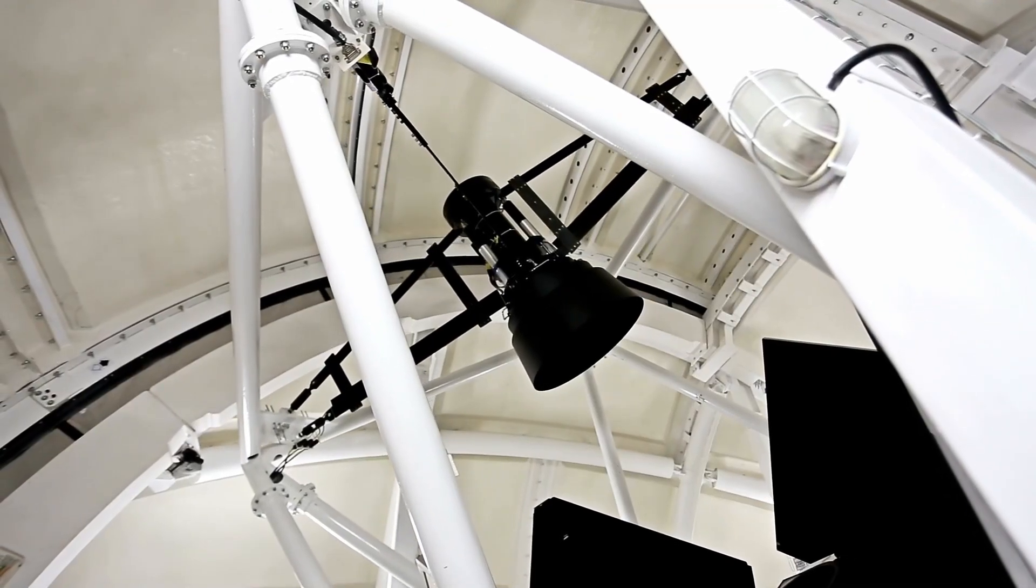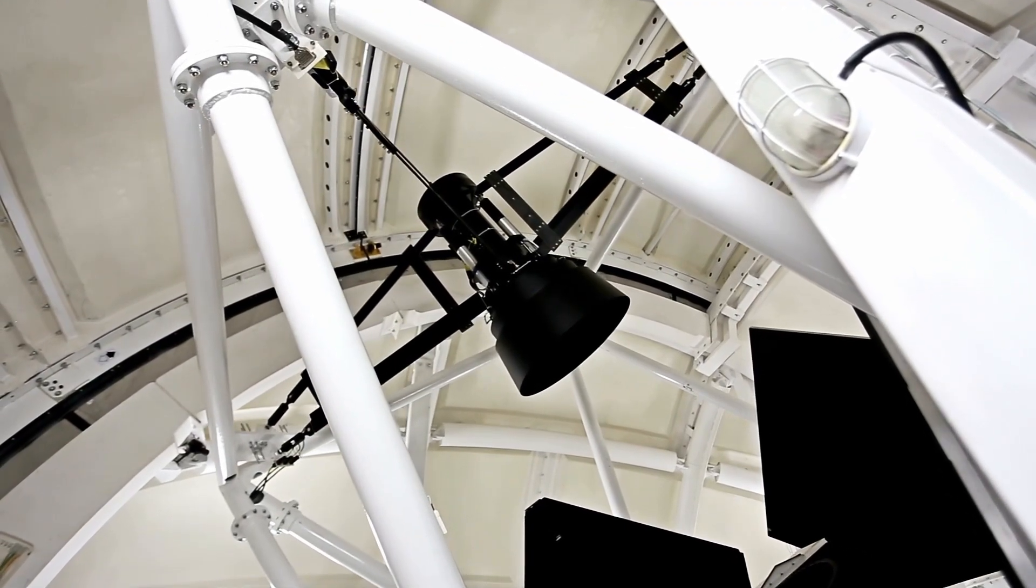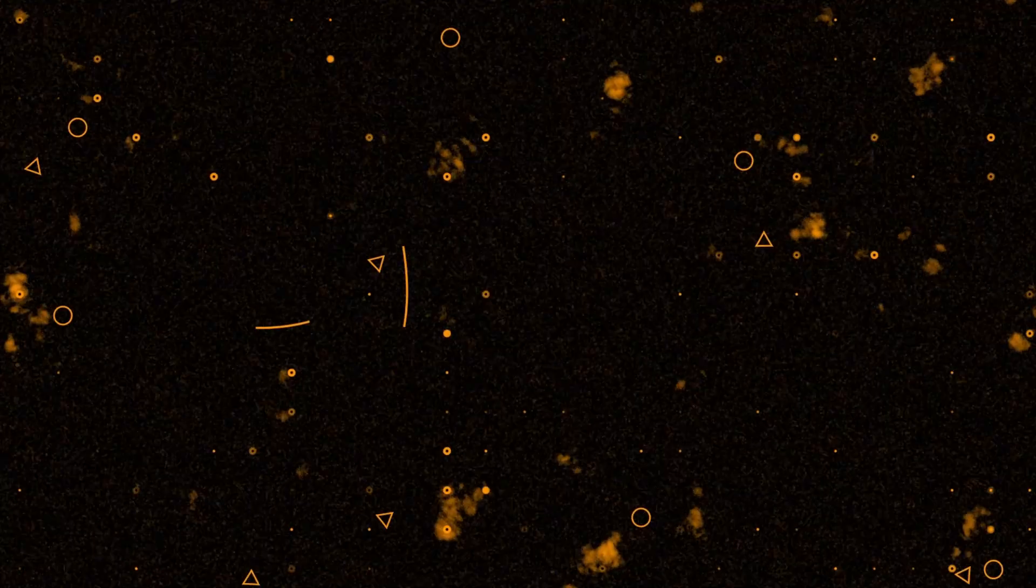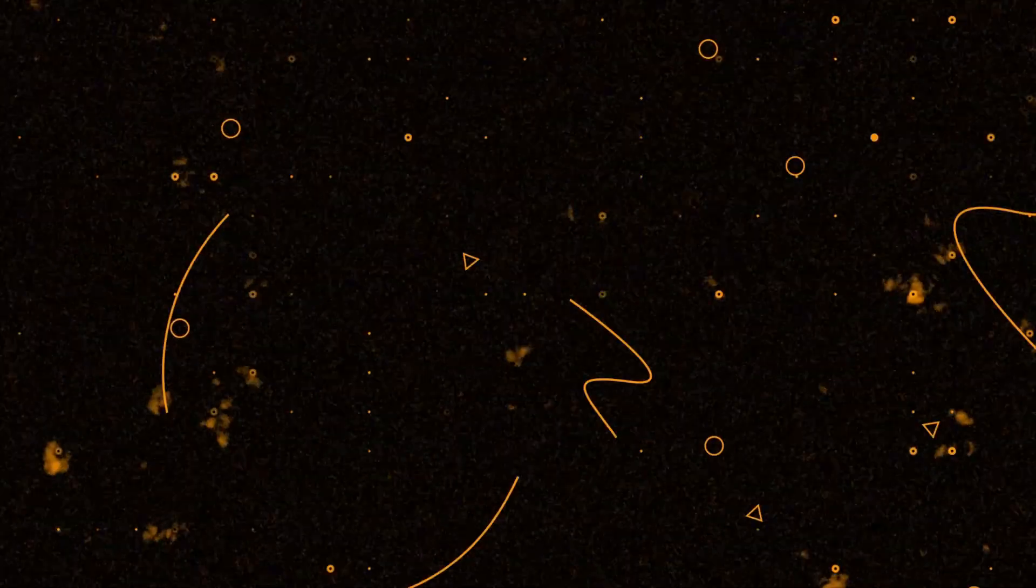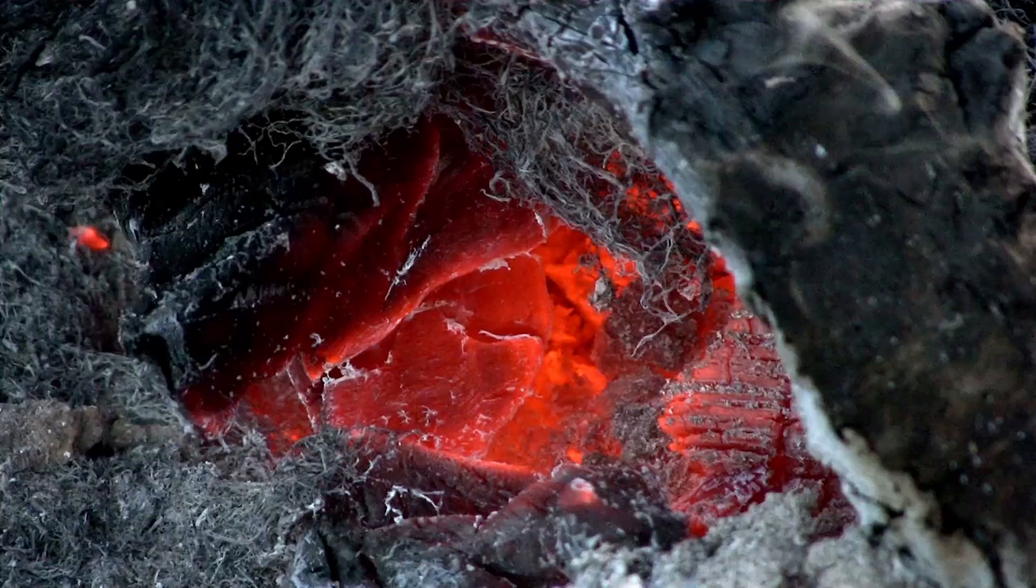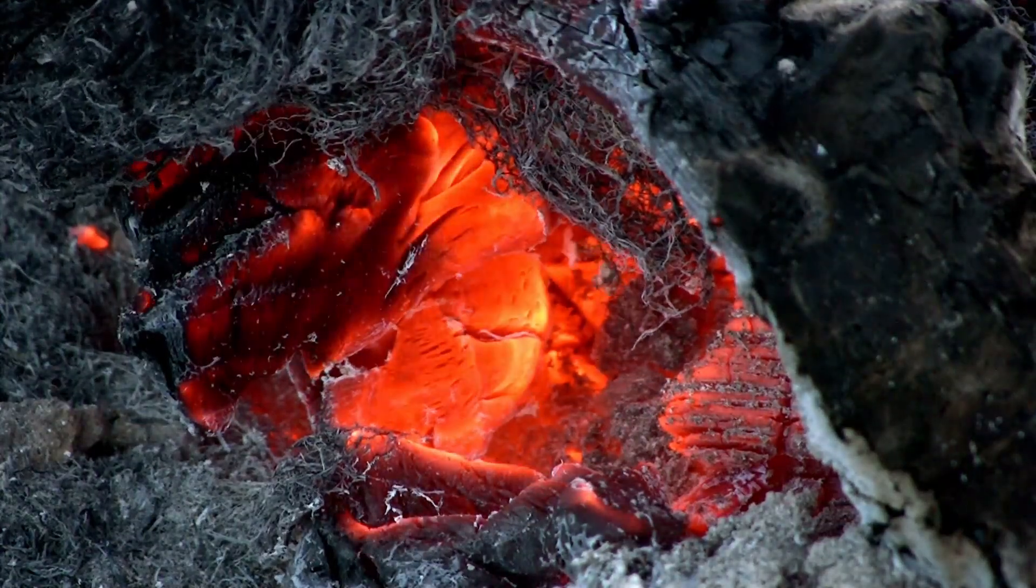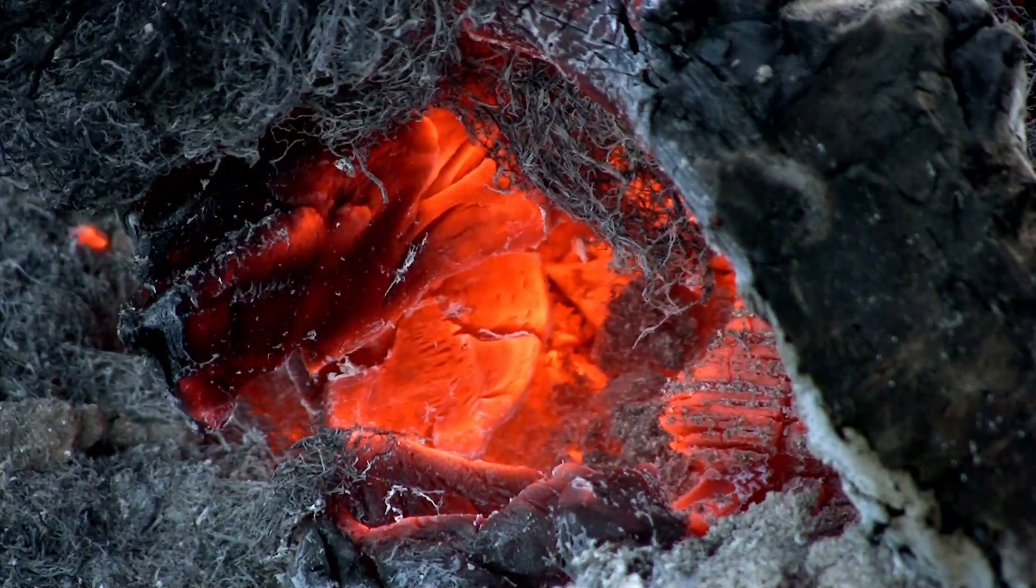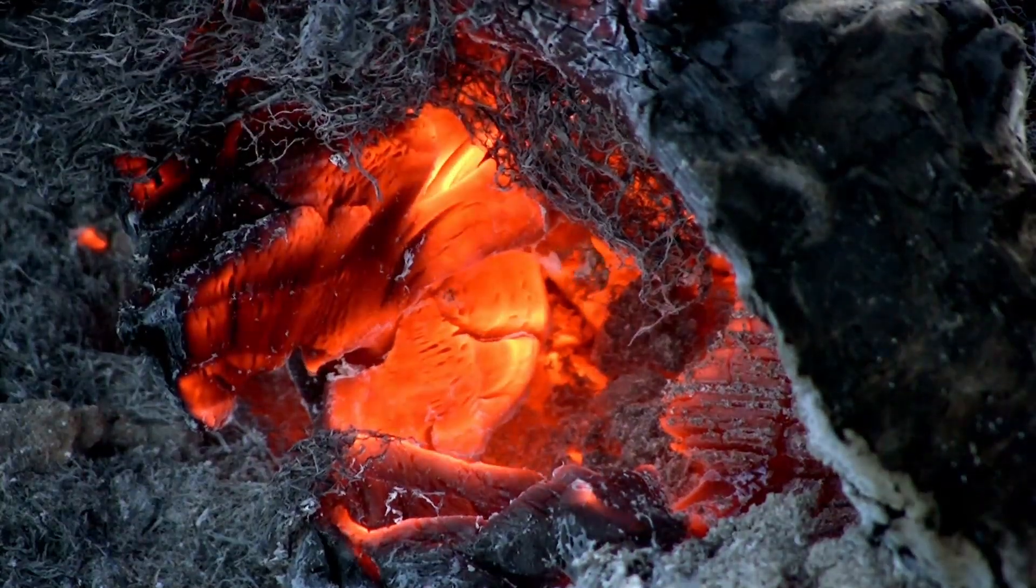Voyager 1 doesn't have the hardware to detect or transmit such data. The signal contained encoded wavelets, nested prime intervals, and quantum-corrected frame matrices far beyond anything Voyager was built to send. The conclusion? Voyager didn't create the signal. It was used.